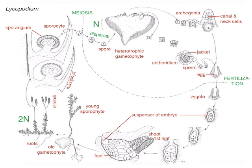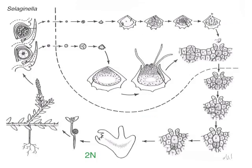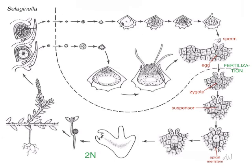Now let's contrast that to Selaginella, which has a heterosporous life cycle. The very top row are the microspores that will give rise to microgametophytes — I'll try to call them male spores and male gametophytes. And then in the middle, we have megaspores that give rise to megagametophytes, which I'll try to call female gametophytes. Let's start with sperm and egg — they get together at fertilization and form a zygote. The zygote divides; we get a suspensor cell and an embryonic cell. The embryonic cell continues to divide and forms an apical meristem, which allows it to grow a shoot. Here's the embryo with a foot rooted in the gametophyte, a root and a shoot, and the suspensor is still there too.